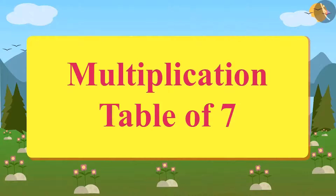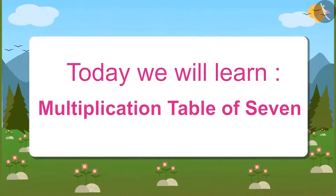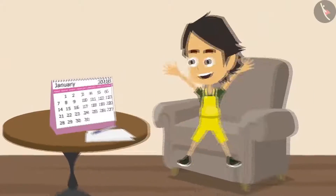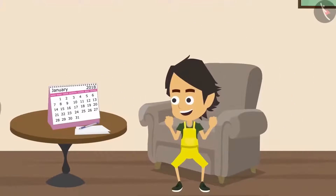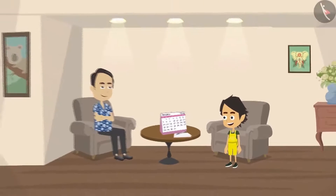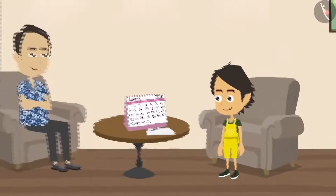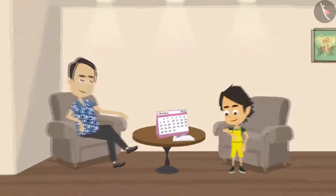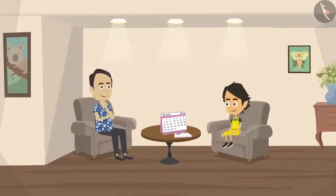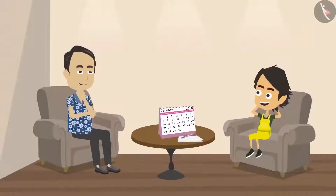Multiplication Table of 7. Today we will learn the multiplication table of 7. Today is Sunday and Ayushman is very happy because every Sunday he goes for an outing with his parents. Papa and Ayushman are ready to go out and are waiting for mummy. By the time mummy gets ready, Papa thinks of teaching something new to Ayushman.